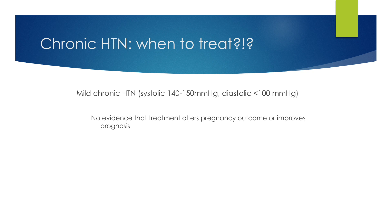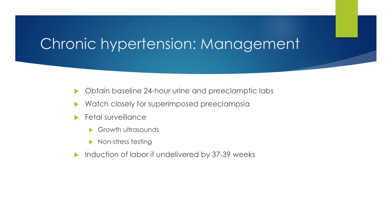There is debate on when to treat hypertensive patients during pregnancy. For patients with mild chronic hypertension, where the systolic blood pressure is less than 140 to 150 and the diastolic is less than 100, there is no evidence that treatment alters pregnancy outcomes or improves prognosis. Management includes obtaining a baseline 24-hour urine collection for protein and preeclampsia labs. Patients are watched closely for superimposed preeclampsia. Fetal surveillance includes monthly growth scans and regular non-stress testing as term approaches. Most patients are recommended to undergo induction of labor if undelivered by 37 to 39 weeks.